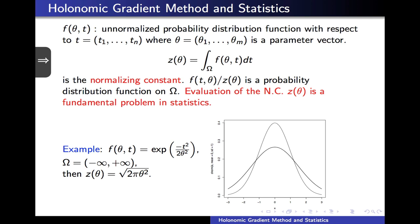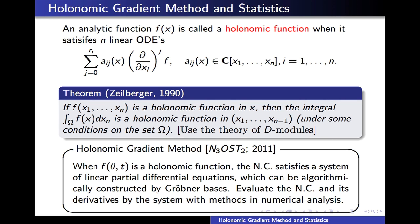The holonomic gradient method is a new method which can be applied to a broad class of unnormalized probability distributions. We can apply the holonomic gradient method to holonomic functions. A function f of the variables x1 through xn is called a holonomic function if it satisfies an ordinary differential equation with polynomial coefficients for each variable xi. In other words, the function f is a holonomic function when it is annihilated by n ordinary differential operators of this form.